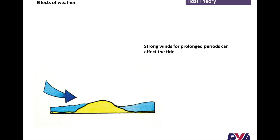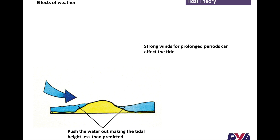Wind can also affect tides — wind blowing across the surface will push the level of the water up, so the water could be deeper than predicted. If it's blowing off the land we'll get a lower water level. When we look up tidal times that's called a predicted height. What's actually happening with atmospheric conditions is the actual height, and quite often there's a difference between the predicted and actual height.